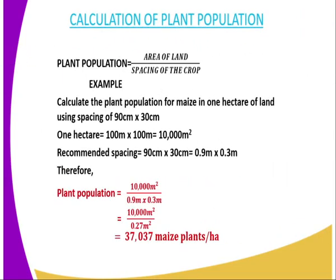Now we go to calculation of plant population. We normally use the formula: plant population equals the area of the land divided by the spacing of the crop. For example: calculate the plant population for maize in one hectare of land using spacing of 90 cm and 30 cm. One hectare is represented by 100 meters by 100 meters, which equals 10,000 square meters.